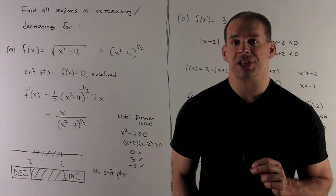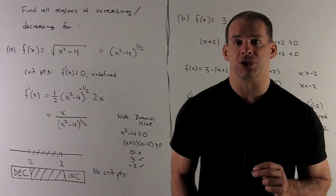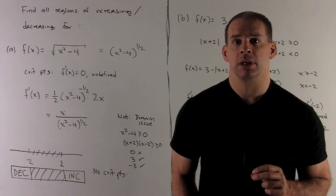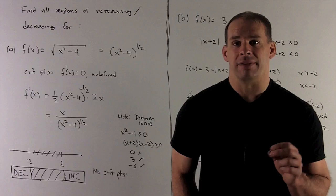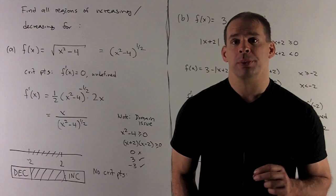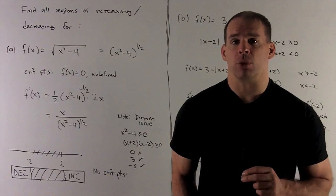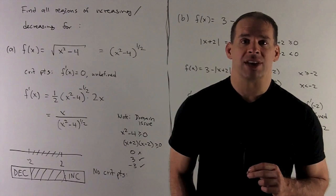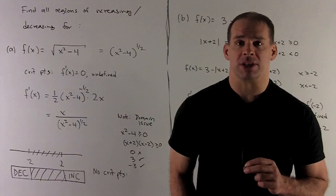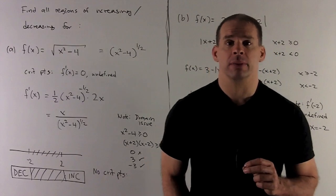Find the regions of increasing and decreasing for the following functions. First function: f(x) equals the square root of x squared minus 4, which we'll rewrite as (x² - 4) to the one-half.